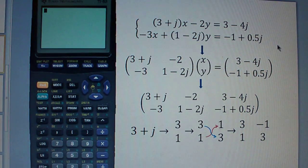Okay, let's see how we can solve a system of linear equations with complex numbers in it. Here we have a system of linear equations with complex numbers. j is the square root of negative 1, which is sometimes called i.